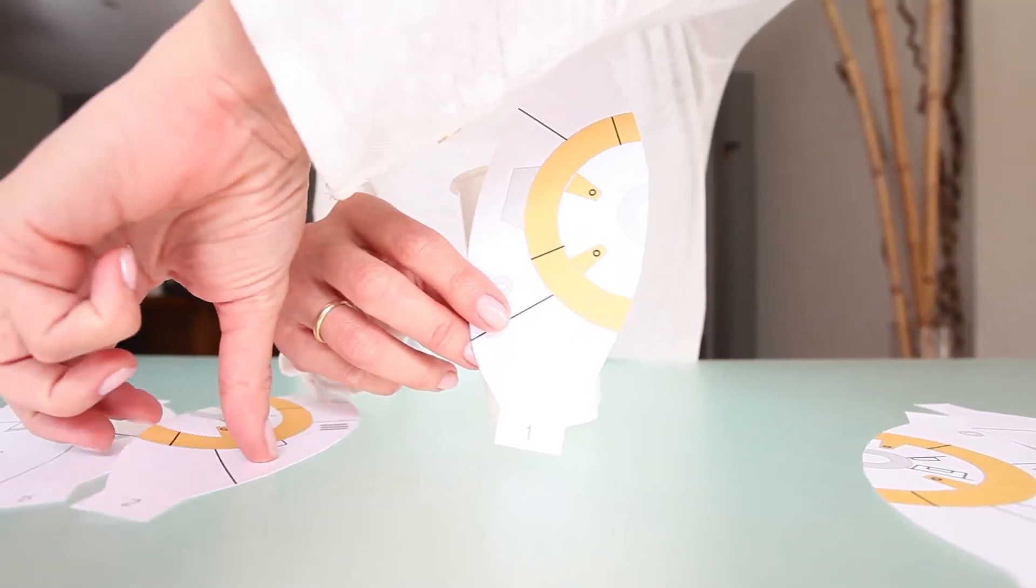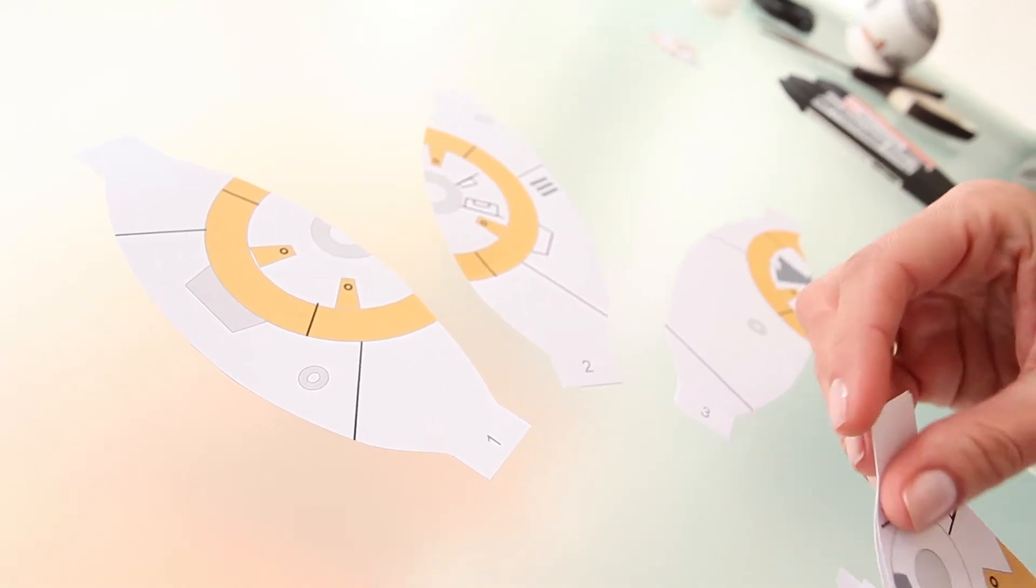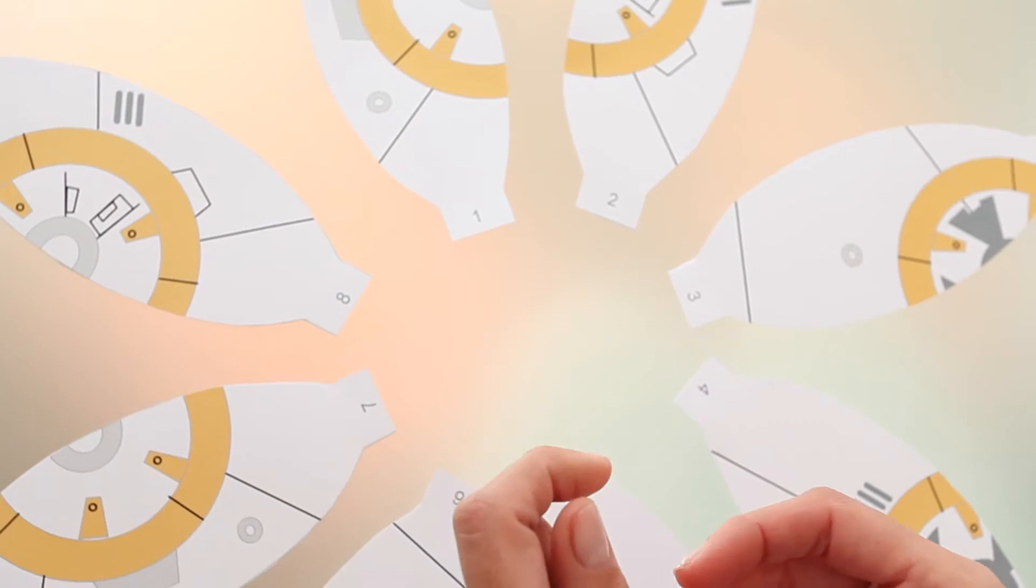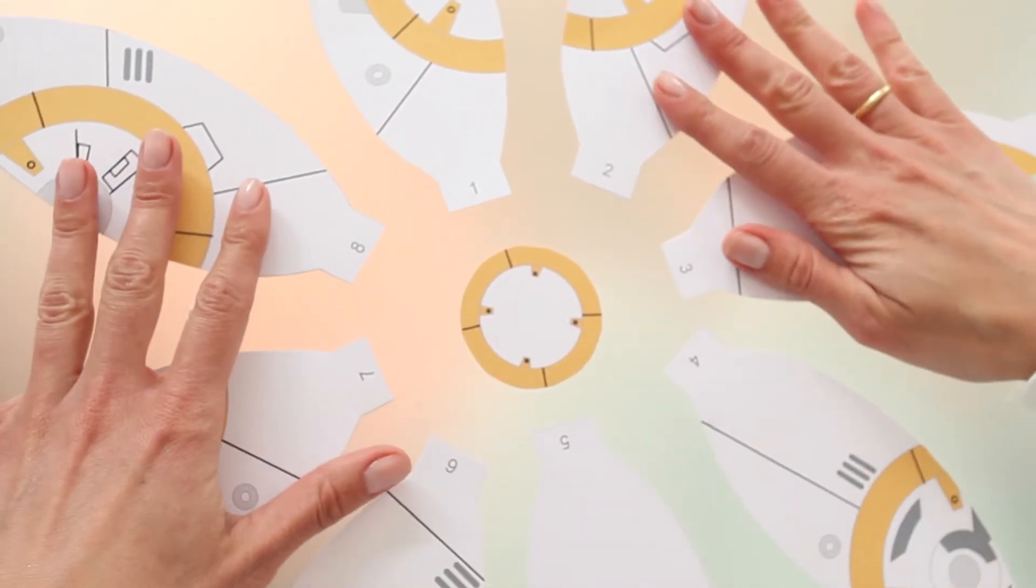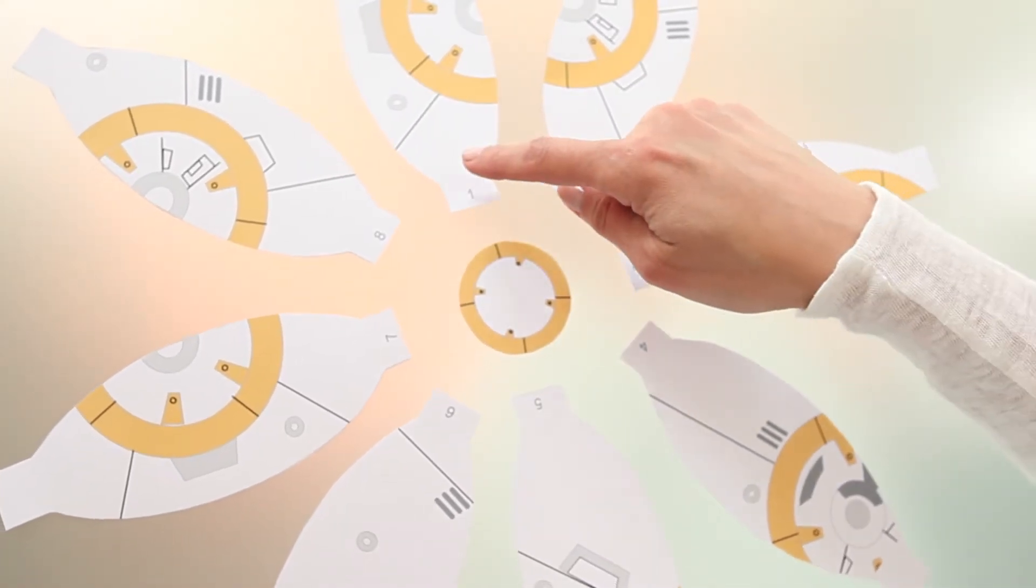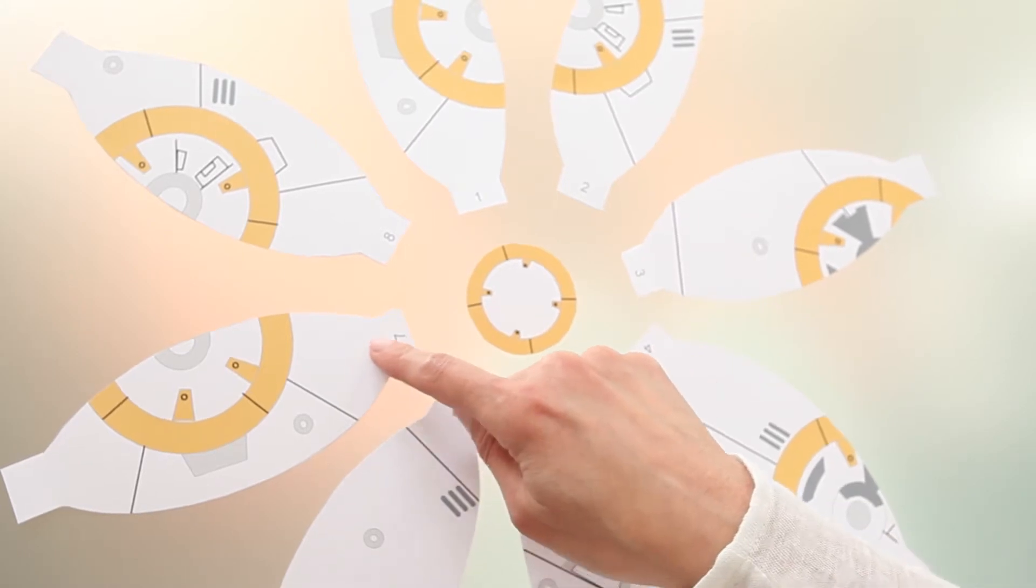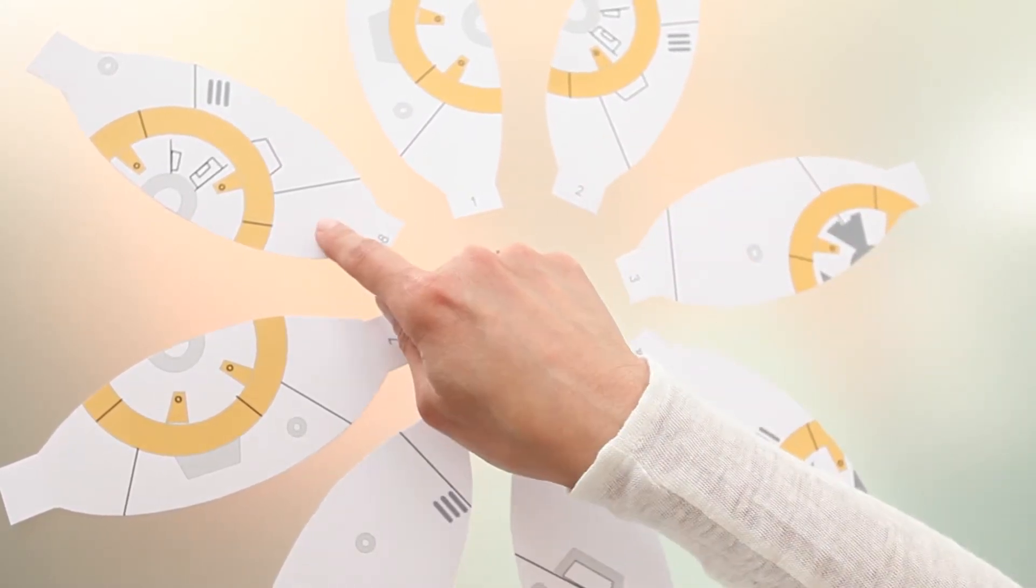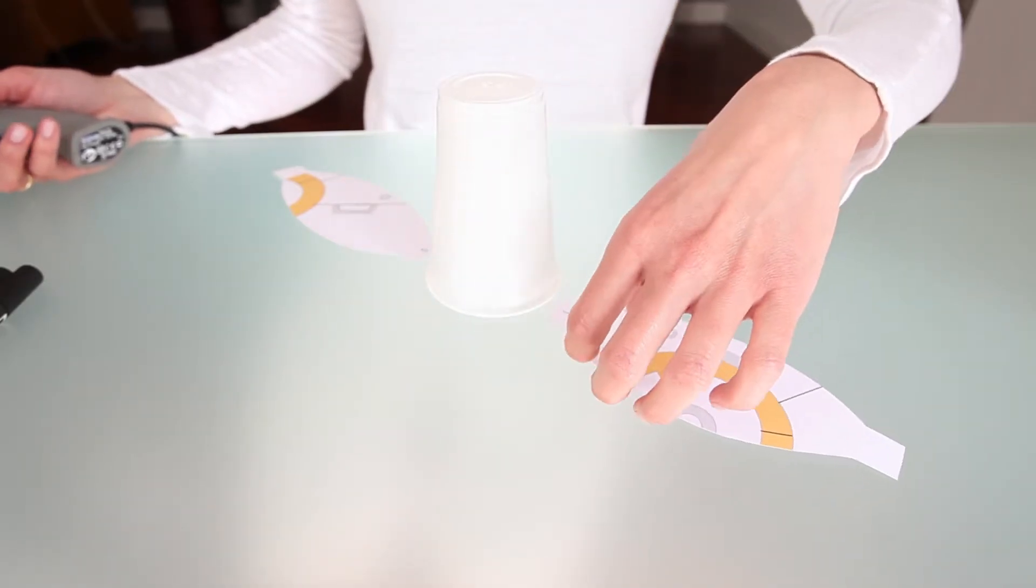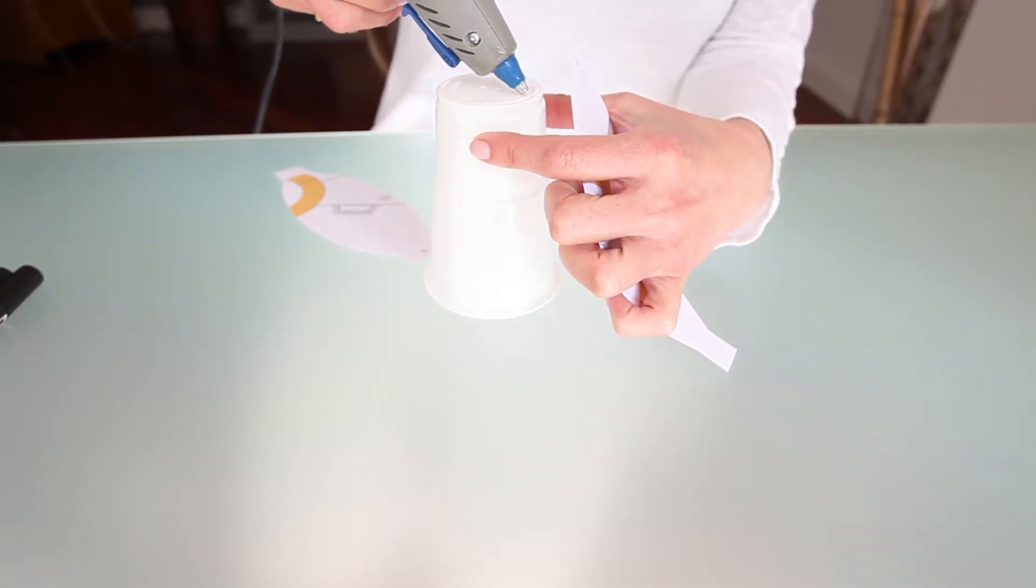Glue the sections of the BB-8 around the cup. First, I distribute them on the table to know how they are going to be placed, and then glue them.